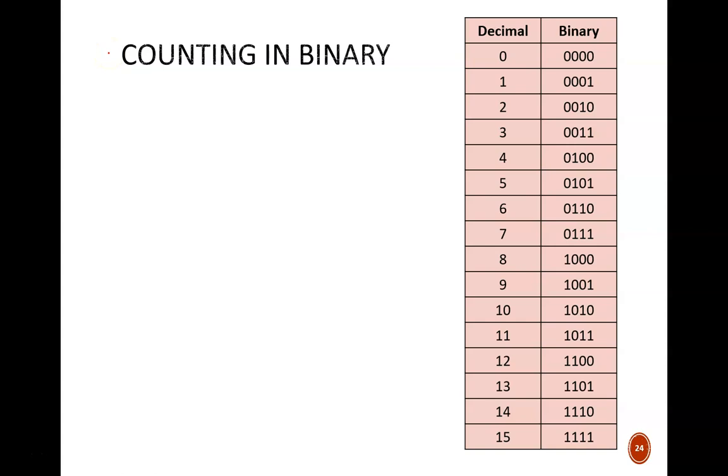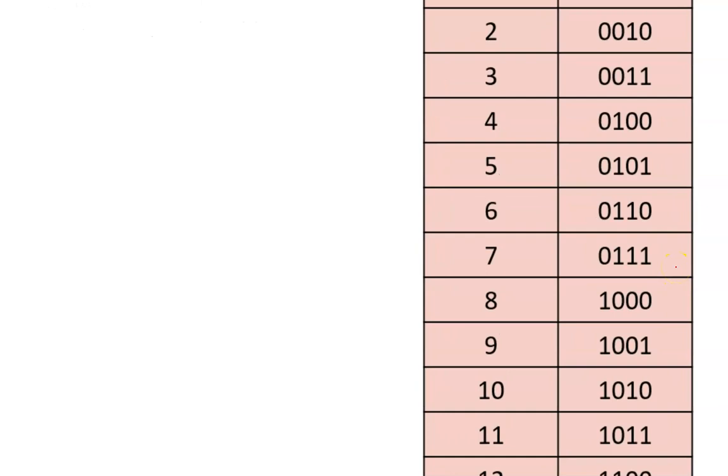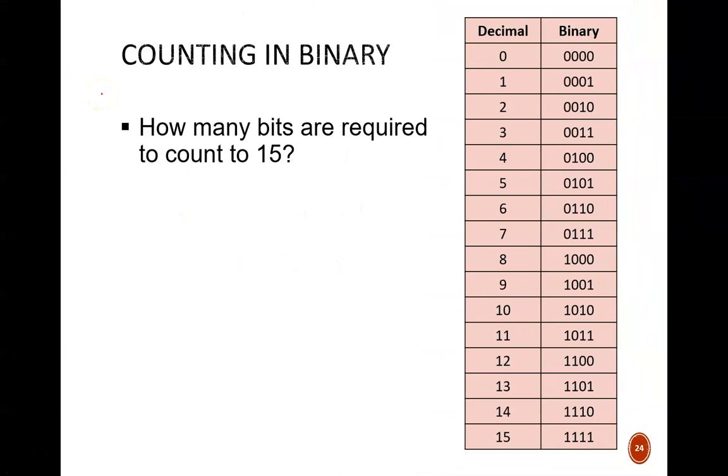Combining the ideas discussed so far, this table shows how to count from decimal 0 to 15 in binary using 4 bits. We can verify any of these values by applying the bit position weights. For example, here is 0, 1, 1, 1. This represents 2 raised to 0 plus 2 raised to 1 plus 2 raised to 2, or 1 plus 2 plus 4, which equals decimal 7. Given this information, how many bits are required to count to 15?